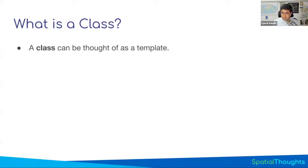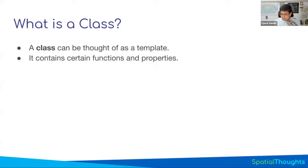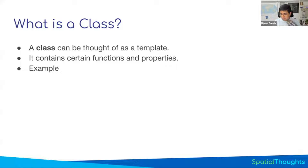An important distinction is what is a class and what is an object. A class is something like a template — it has some functions and some variables which are put together in a template. You cannot use classes by themselves. You can think of a class like a blueprint: you can see it, but you cannot use it directly. To be able to use the class, you have to create an object from that blueprint.